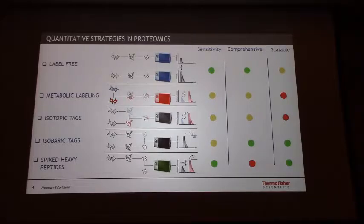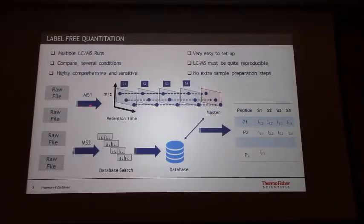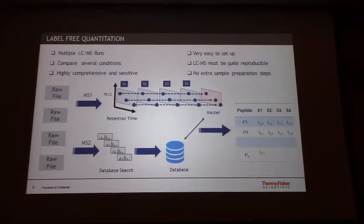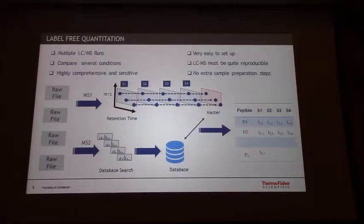I think one of the major advantages when you start a project is label-free, because it's very easy — you can compare certain conditions, it's highly comprehensive and sensitive, and you don't need extra sample preparation. The protocol starts when you acquire the raw samples, then you analyze the MS1 scans by extracting features within the retention time space and the m/z space, align features across different samples, and create a master feature map of the whole dataset. You also take all the MS2 scans, do database searching, and translate those peptide identifications with their retention time and mass coordinates back to the master feature table.